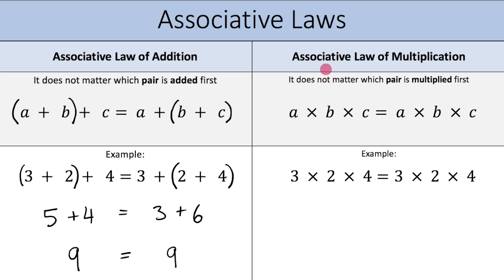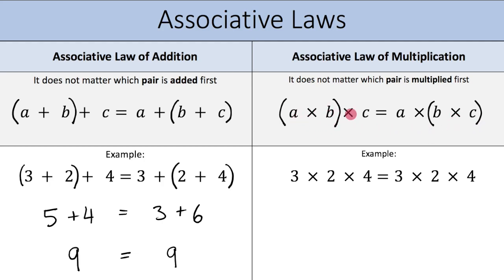Let's now move on and talk about the associative law of multiplication, which tells me it does not matter which pair is multiplied first. I need you to put in brackets here and here on the left side, and here and here on the right side. So what this tells me is that (a times b) times c equals a times (b times c). Let's now do an example to see whether or not this is true.